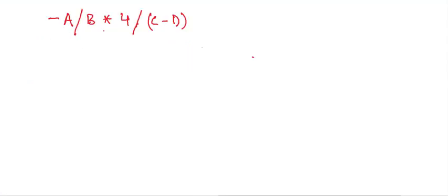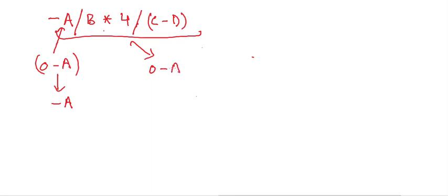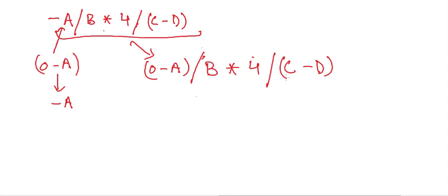For the next expression, one thing to understand is that minus A can be written as 0 minus A — they are the same thing. So we can rewrite the expression as 0 minus A slash B star 4 slash C minus D. This handles the unary minus: we treat it as having nothing on the left-hand side, which is effectively zero.